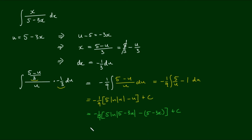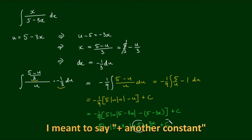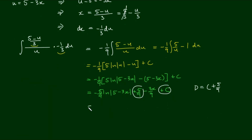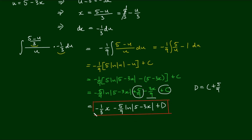Let's take the front negative 1 over 9 into the brackets and we get negative 5 over 9 times the log of 5 minus 3x plus 5 over 9 minus 3x over 9 plus c. We note that we have a constant of 5 over 9, and grouping constants together we call d equals c plus 5 over 9, giving us the same answer that we had before.